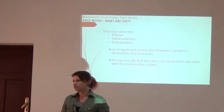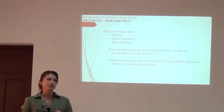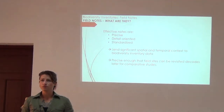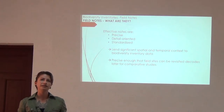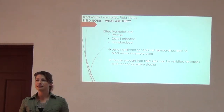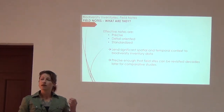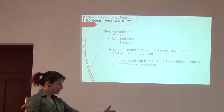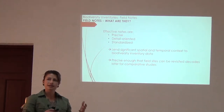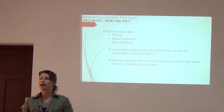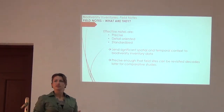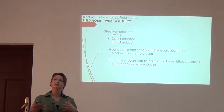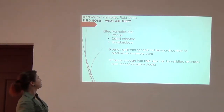Precision means you want to be able to look at these notes and know exactly where you were — so that 10 or 20 years from now, you or somebody else can look at your locality information, get back out to that exact same site, and see what it looked like then versus now. Has species composition changed? It allows for so many more analyses, not just now but in the future, with the data you're collecting.